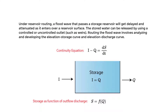Now let's discuss reservoir routing. We're still trying to estimate the outflow hydrograph, focusing on a flood wave that passes a storage reservoir, which gets delayed and attenuated — just like in channel routing. This occurs as the flood wave enters over a reservoir surface. The stored water can be released by controlled and uncontrolled outlets such as weirs. Routing the flood wave involves the analysis and development of the elevation-storage curve and the elevation-discharge curve.